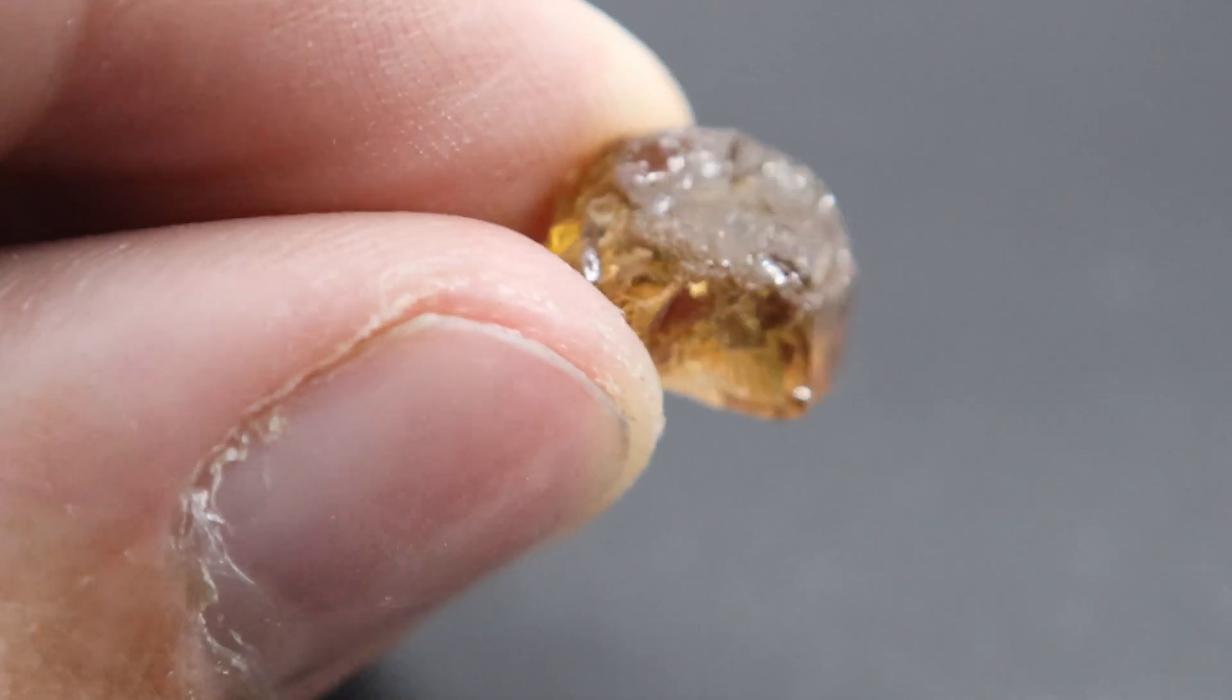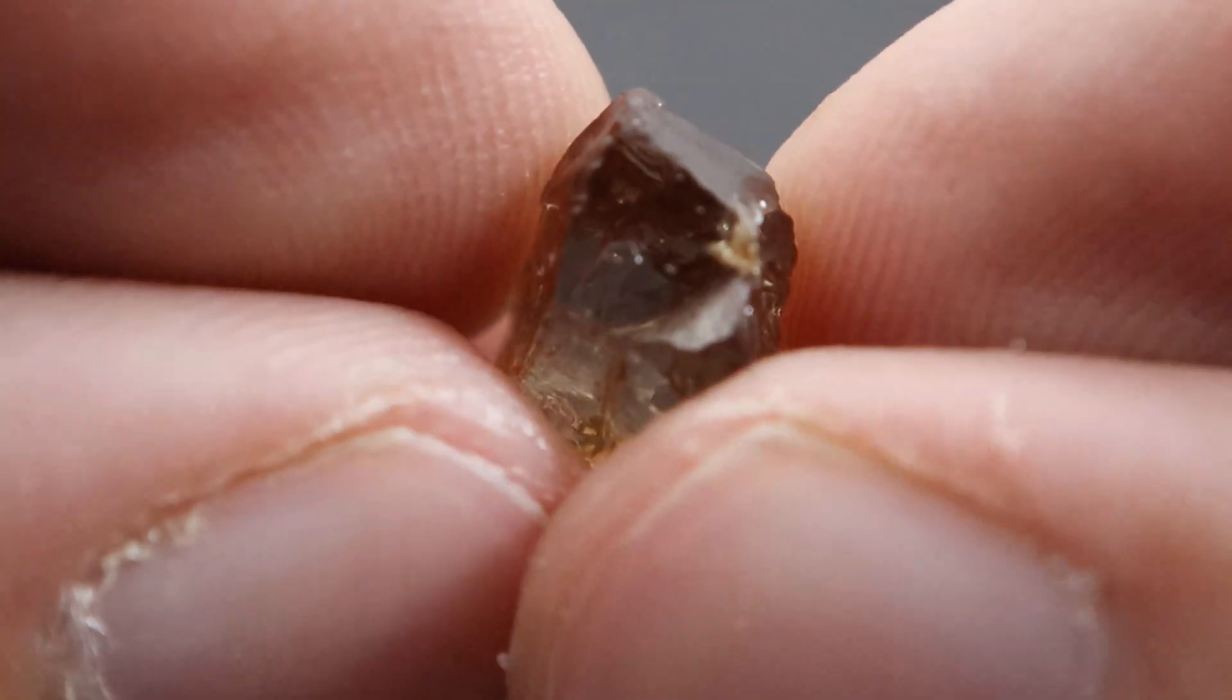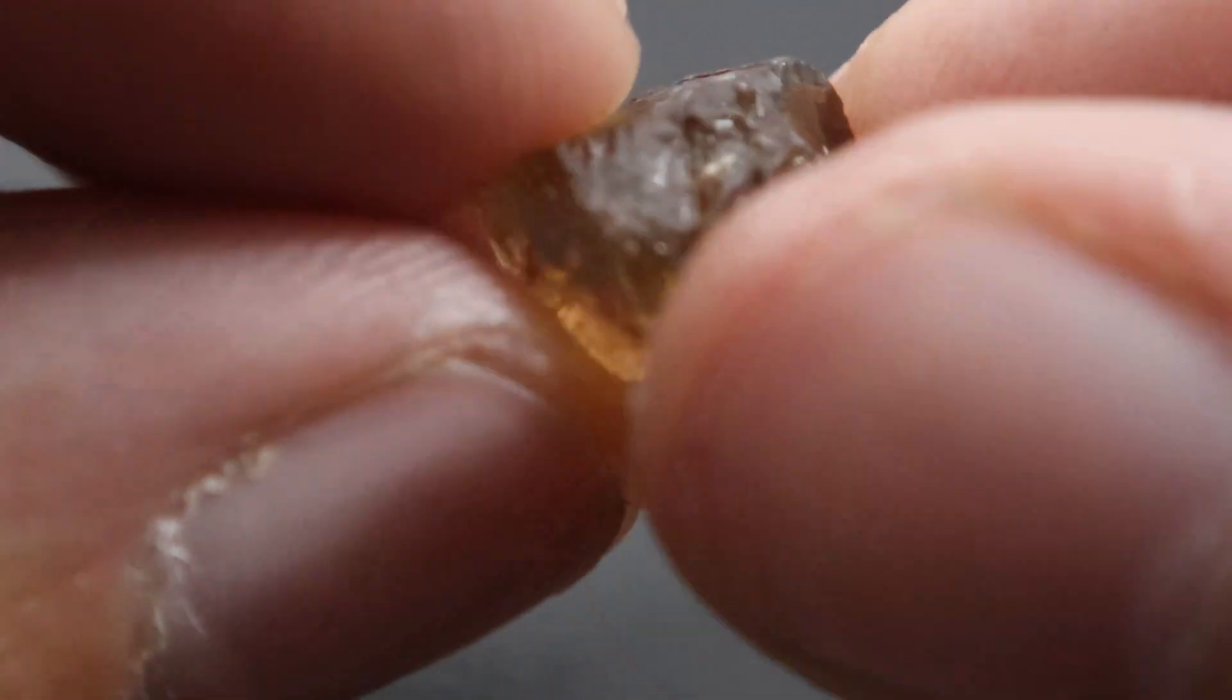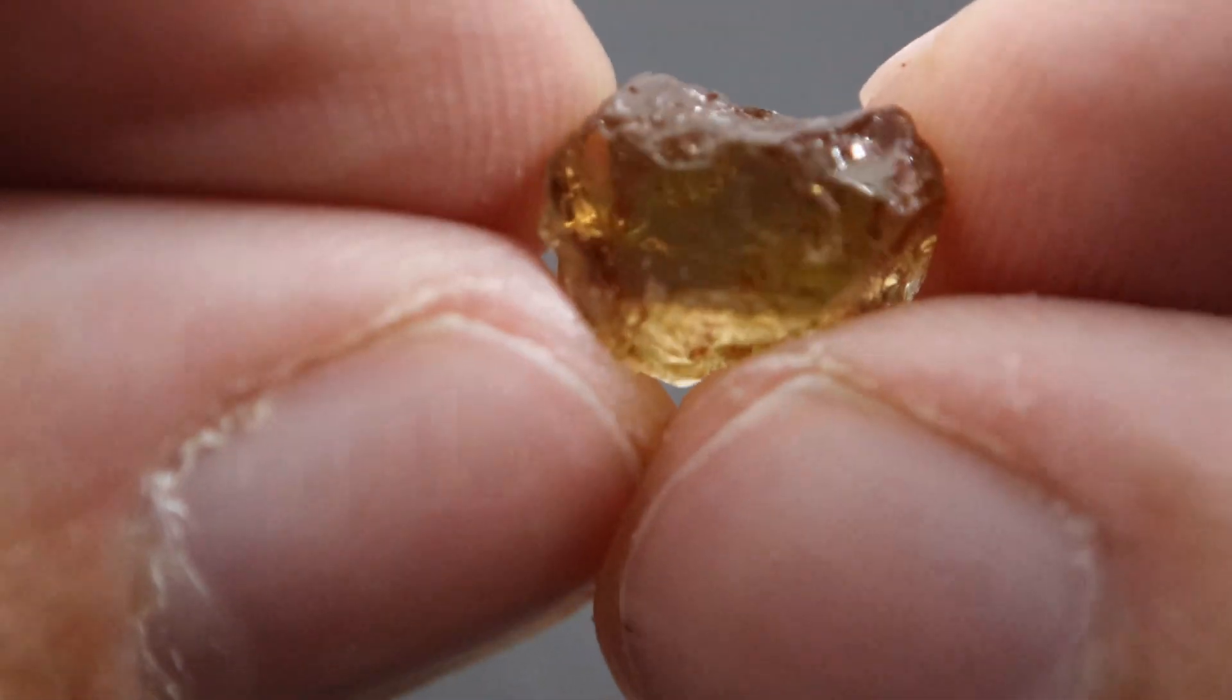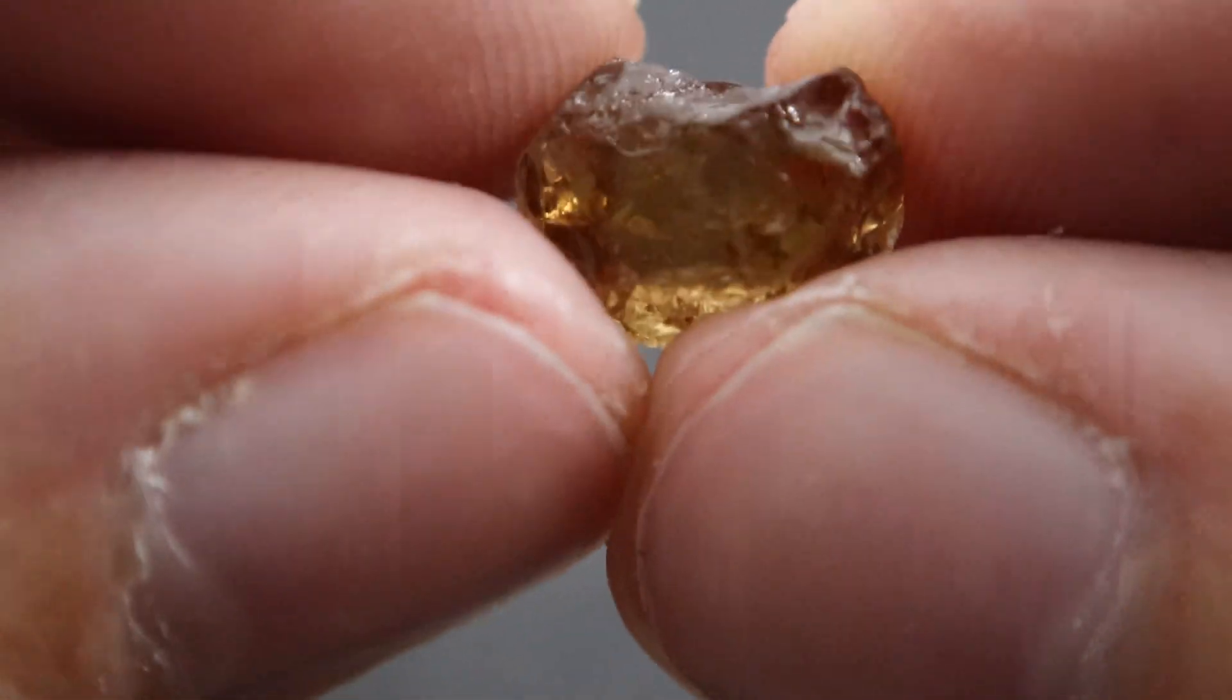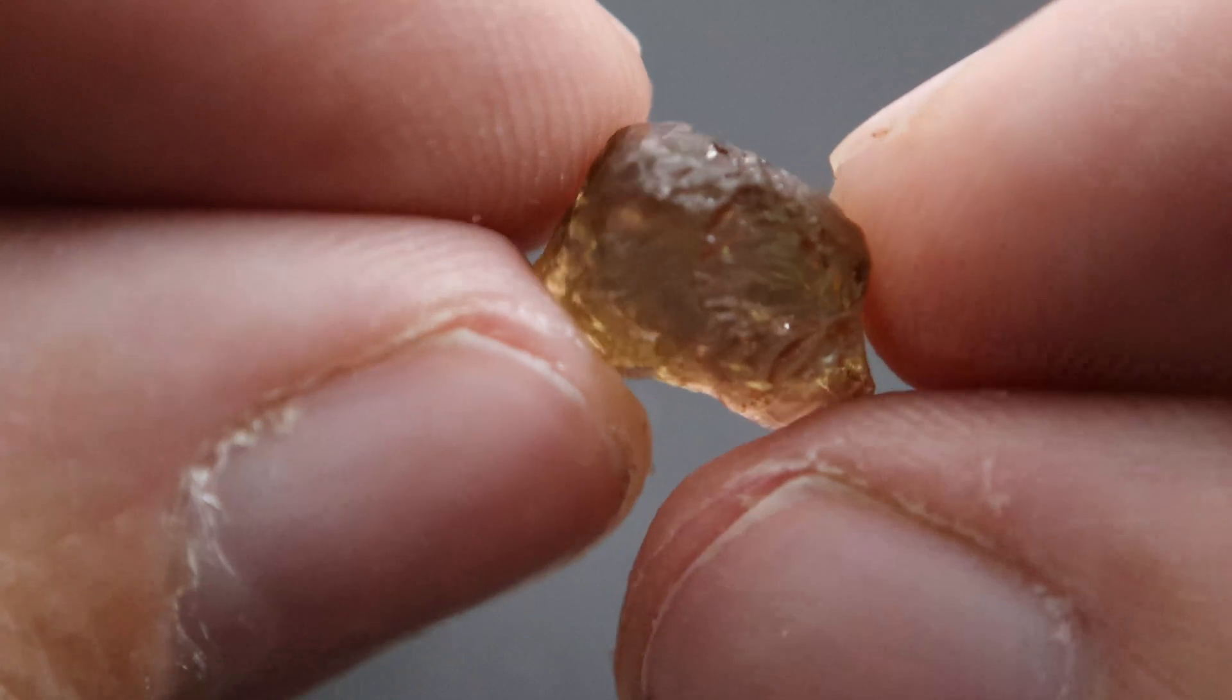This color isn't the normal color you might expect to see in tanzanite. Typically tanzanite is heat treated to make them the more common purple and blue hues. Unheated tanzanite can be an assortment of different colors. This natural orangey color isn't something that I've really seen much of in tanzanite.